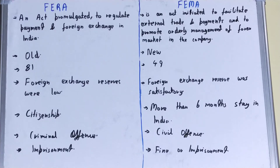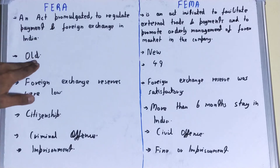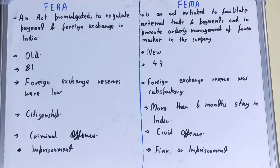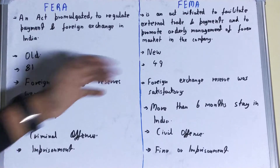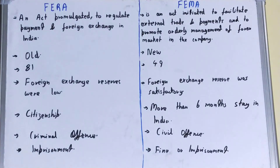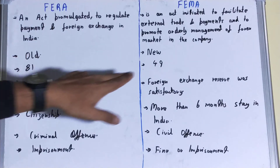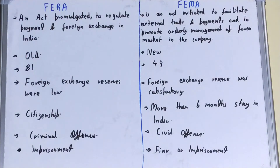In terms of the act itself, FERA is an older act, whereas FEMA is a newer act introduced around 1996. Regarding the number of sections, FERA has 81 sections whereas FEMA has 49 sections.